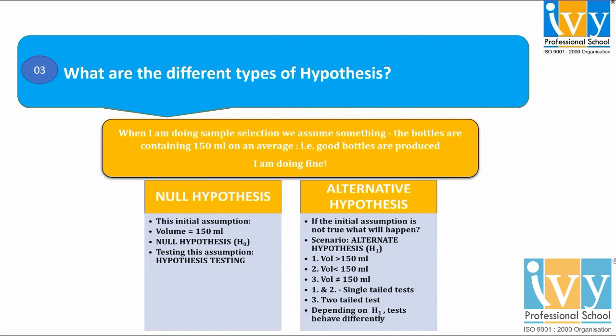The alternative hypothesis, denoted H1, means that there is a difference between certain characteristics of the population. For example, with bottles containing 150 ml on average, the null hypothesis assumes the volume is exactly 150 ml. The alternative hypothesis assumes the volume is greater than, less than, or not equal to 150 ml. Cases 1 and 2 are single-tailed tests, while case 3 is a two-tailed test.